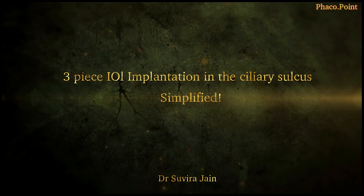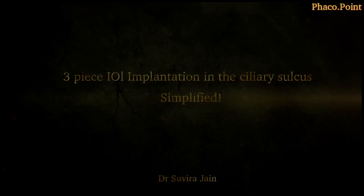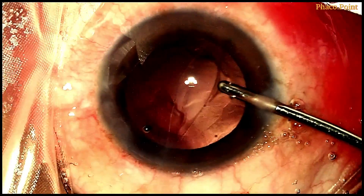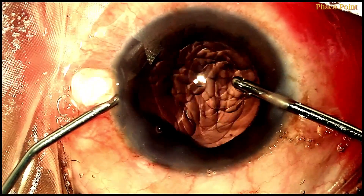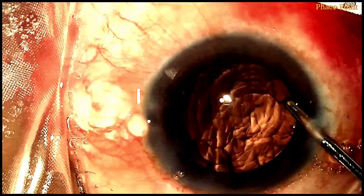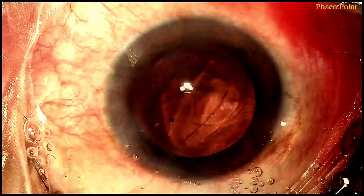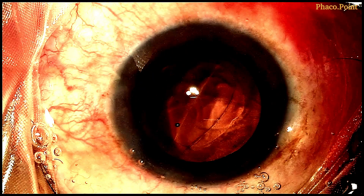Let's now learn how to implant a three-piece IOL. In this first case, a patient with a posterior polar cataract with an open posterior capsule — at the end of cortex wash, a visco-fluid exchange with the dispersive viscoelastic is performed.